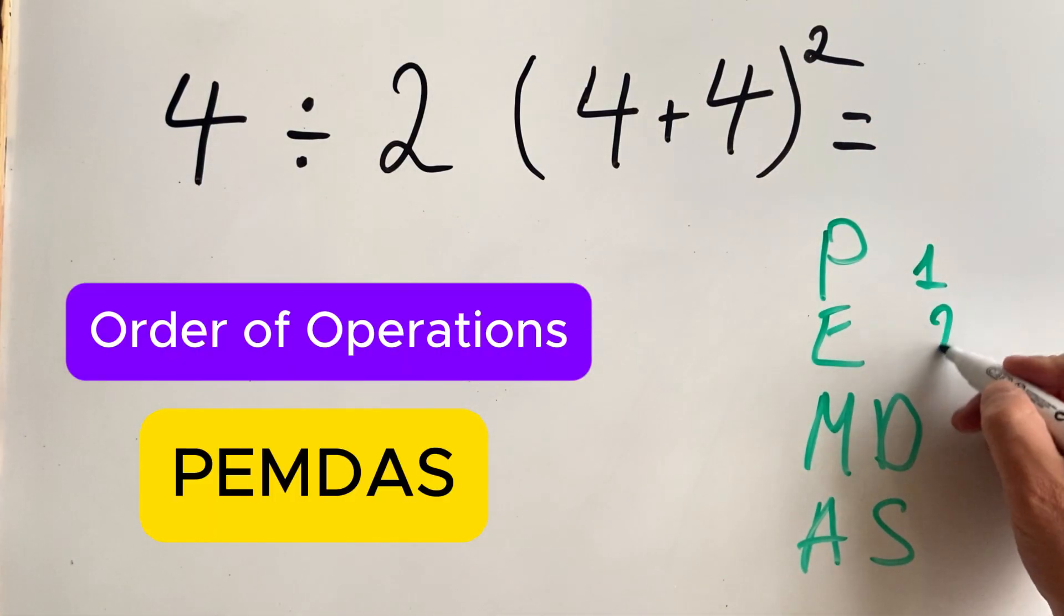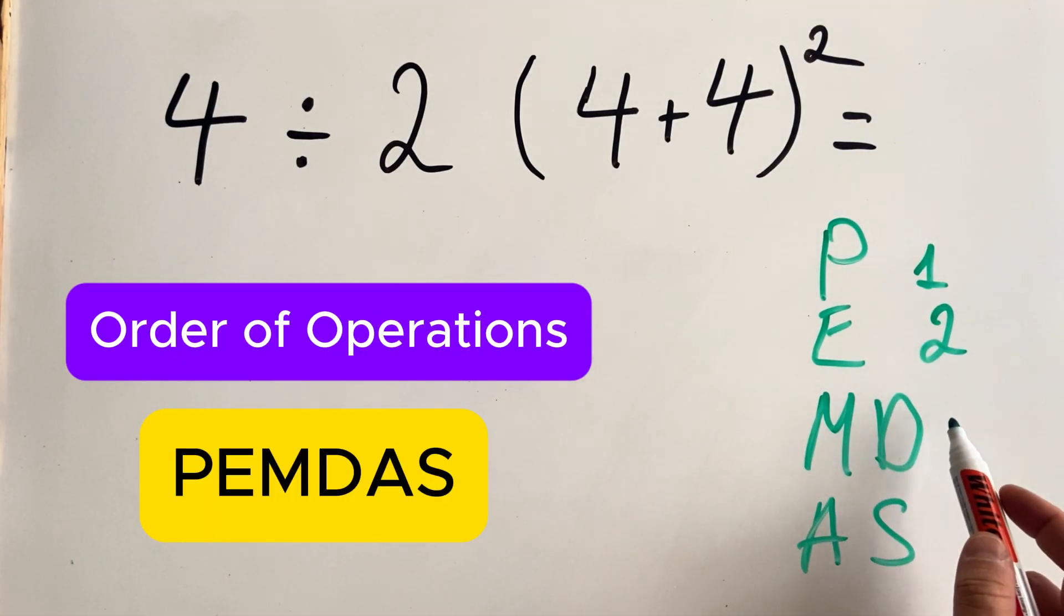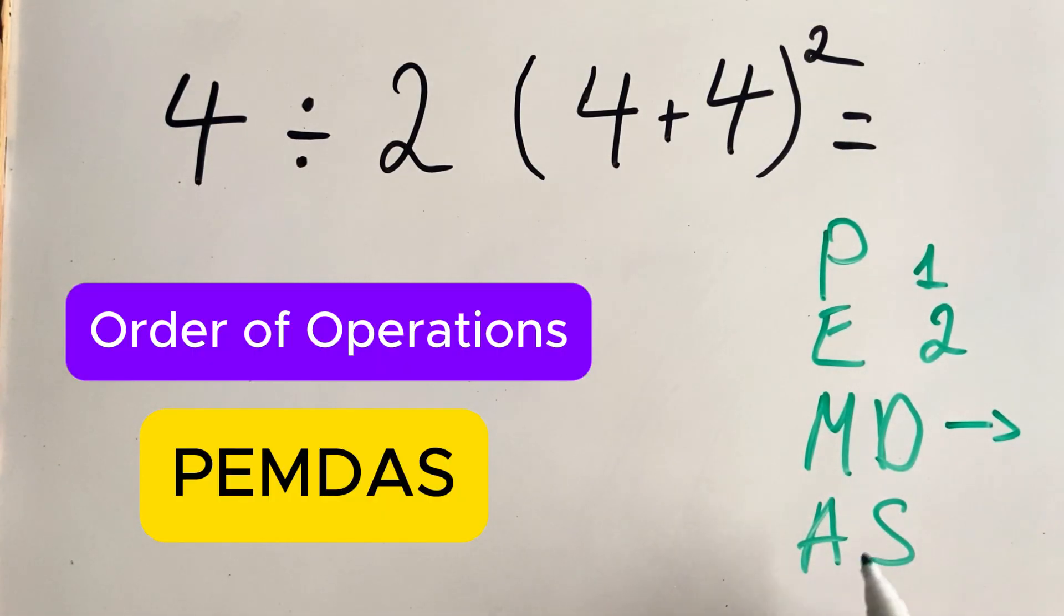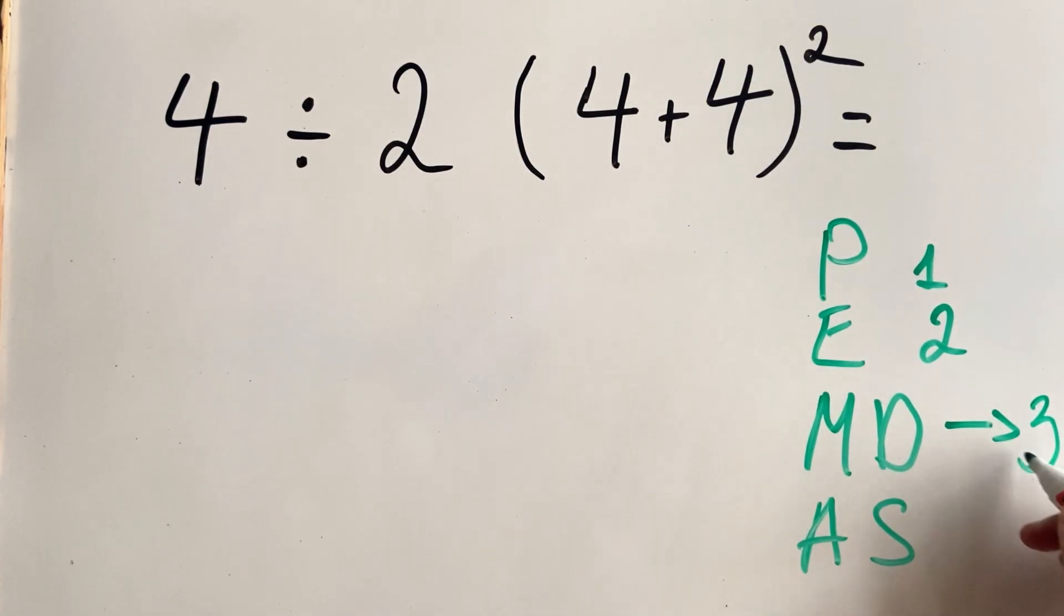E for exponents, it's done second. M for multiplication, D for division, and these must be done from left to right. They should be done in the third place. And we have addition and subtraction, which need to be done in the fourth place.